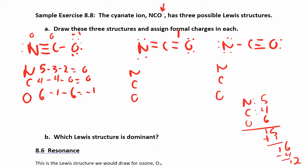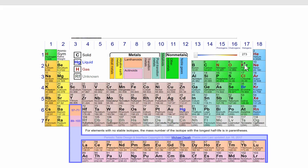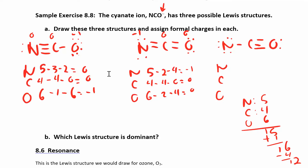For structure 2: nitrogen has 5 − 2 lines − 4 dots = −1; carbon has 4 − 4 lines − 0 dots = 0; oxygen has 6 − 2 lines − 4 dots = 0. So formal charges are −1, 0, 0. Both structures 1 and 2 give the same set of numbers, but the rule is to put the negative charge on the most electronegative atom. Oxygen is more electronegative than nitrogen, so structure 1 is more favorable.